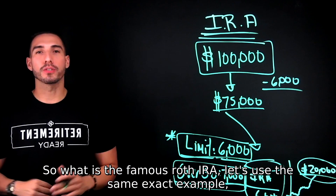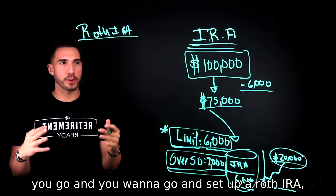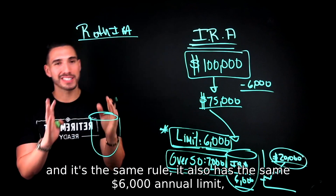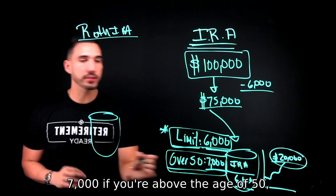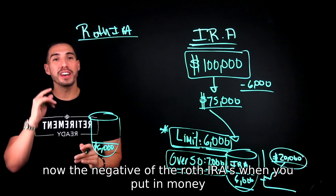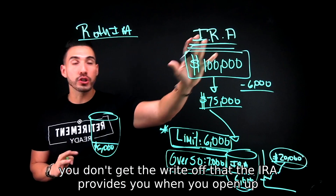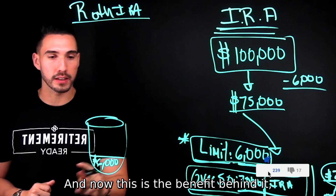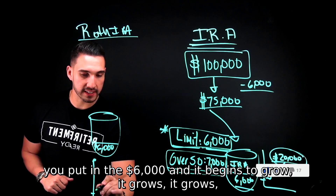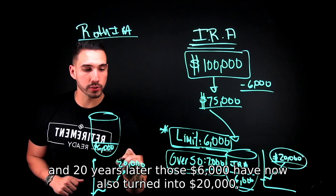So what is the famous Roth IRA? Using the same example: you make $100,000 a year and you set up a Roth IRA. It has the same $6,000 annual limit, or $7,000 if you're above the age of 50. You put in $6,000 into that Roth IRA. The negative of the Roth IRA is that when you put in money, you don't get the write-off that a traditional IRA provides. You put in the $6,000, it begins to grow, and 20 years later those $6,000 have also turned into $20,000.